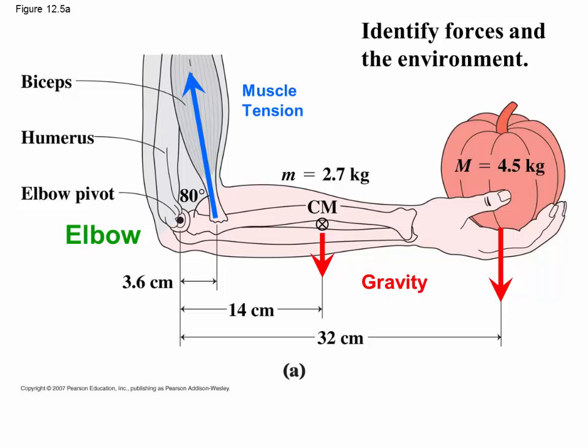It's constrained by the elbow which keeps the forearm from moving sideways or up and down at the left end. That's our first task: identify the forces acting in the problem, the tension force in the muscle and the environment. Gravity acting on the arm and the pumpkin and the elbow.